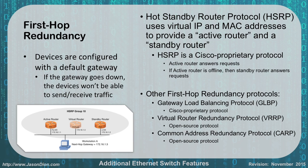A workstation can only be configured with one default gateway, so instead we create a router group with a virtual router — as you can see in the middle of the diagram. When I configure the workstation, I configure its gateway to be this virtual router at .3. Any time the computer tries to go to .3, it goes to whichever router in the group is active — currently the one on the left at .1. If .1 goes down, the standby router picks up. It's basically like calling a number and whichever one answers provides service to the client.